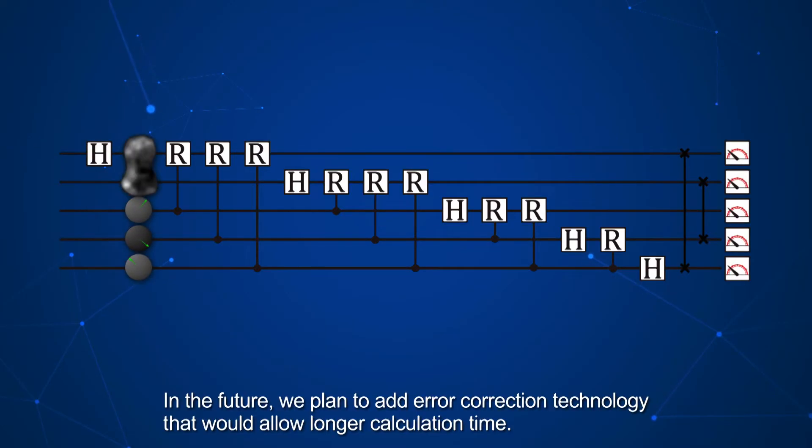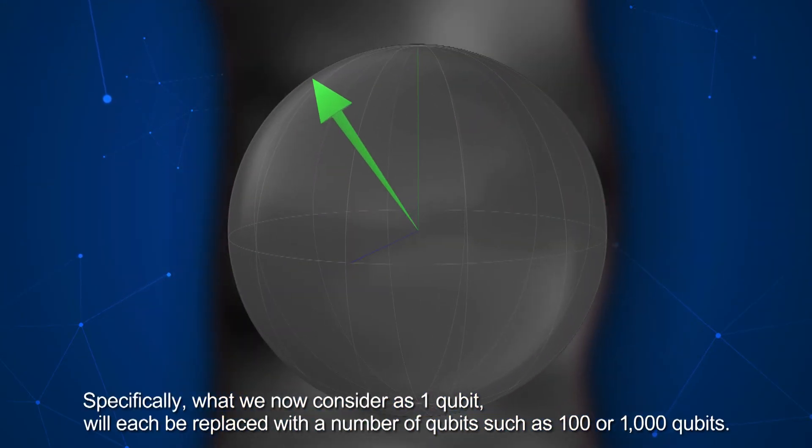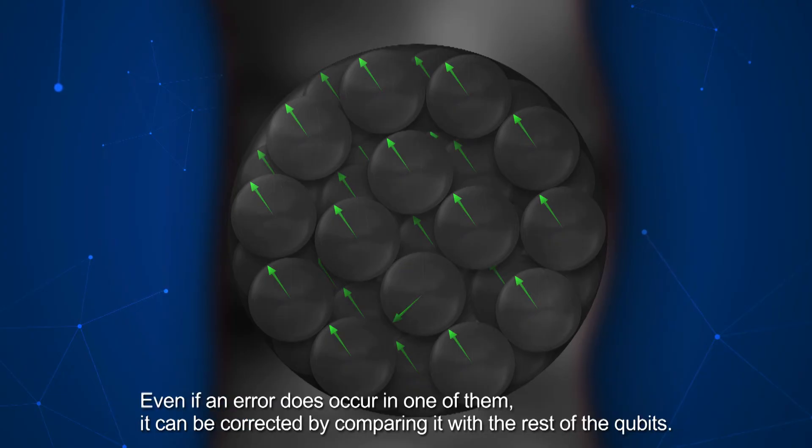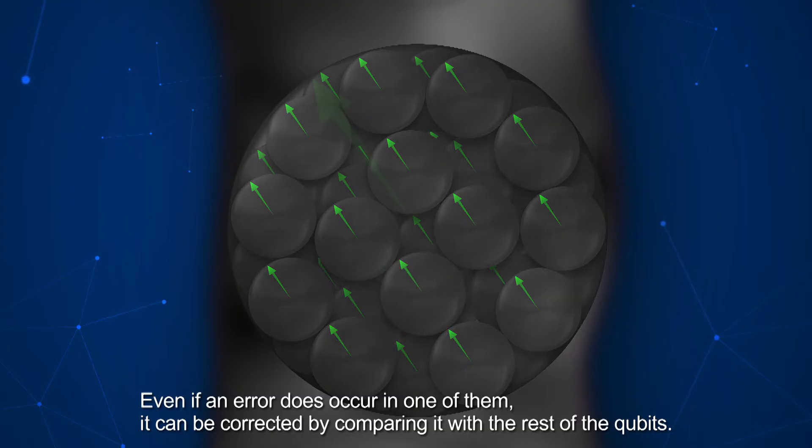In the future, we plan to add error correction technology that would allow longer calculation time. Specifically, what we now consider as one qubit will each be replaced with a number of qubits, such as 100 or 1000 qubits. Even if an error does occur in one of them, it can be corrected by comparing it with the rest of the qubits.